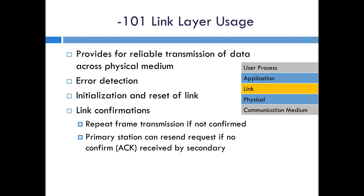The 101 link layer is different from 104. In some ways you might say 101 has a link layer, whereas in 104 the link layer is replaced by the TCP/IP stack. The 101 link layer has a checksum or CRC to make sure that the data is received correctly. It also has the capability to initialize or reset the link, and it has link confirmations to confirm that the primary and secondary stations are up and running. That primary and secondary refers to both master and outstation depending on who initializes the message.